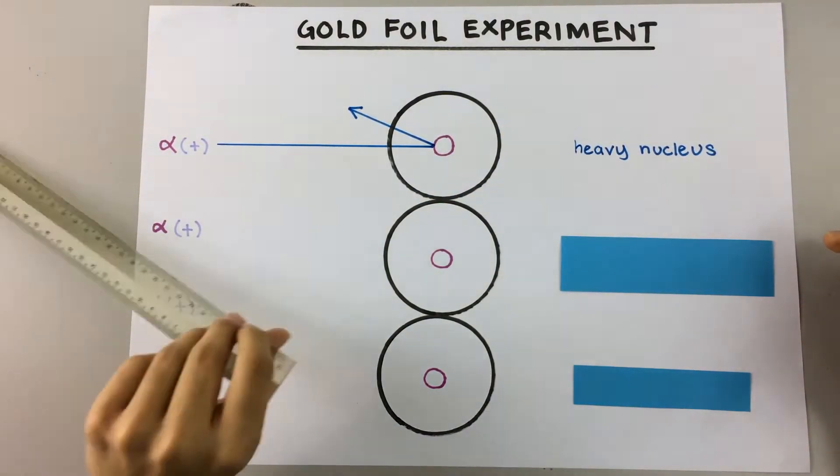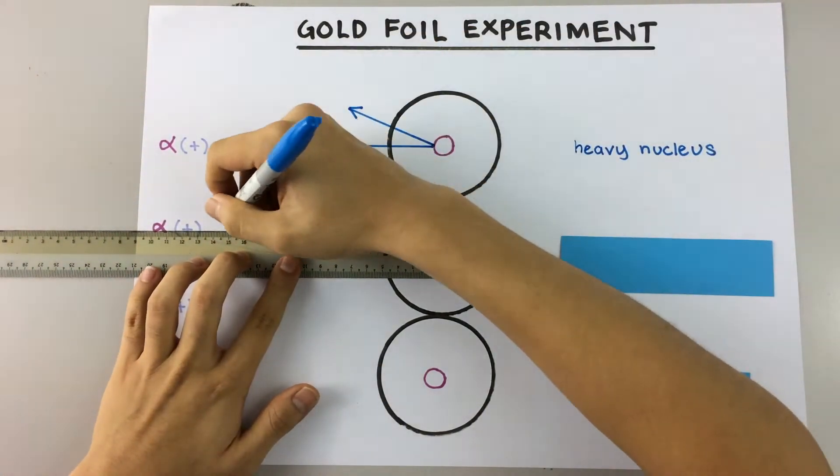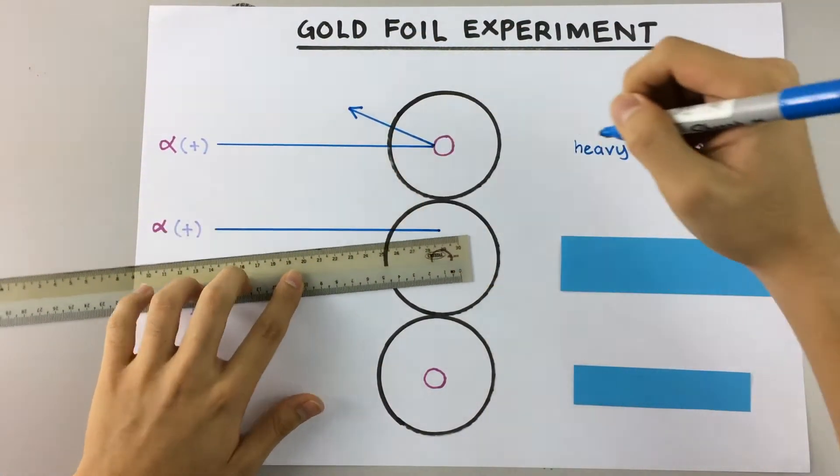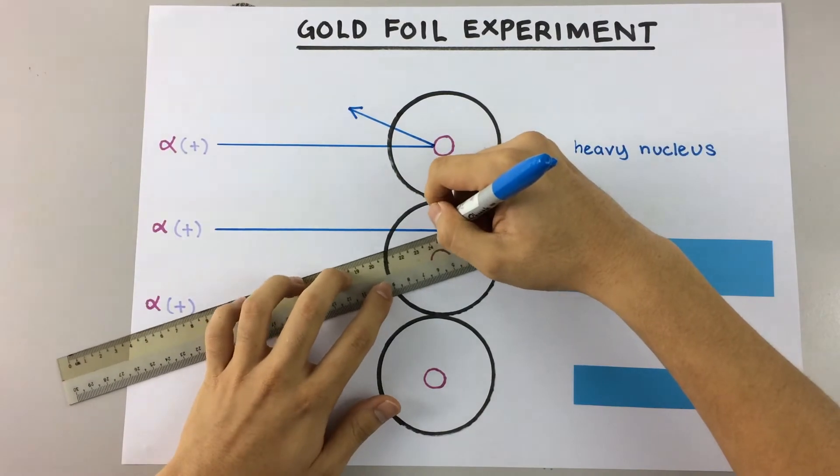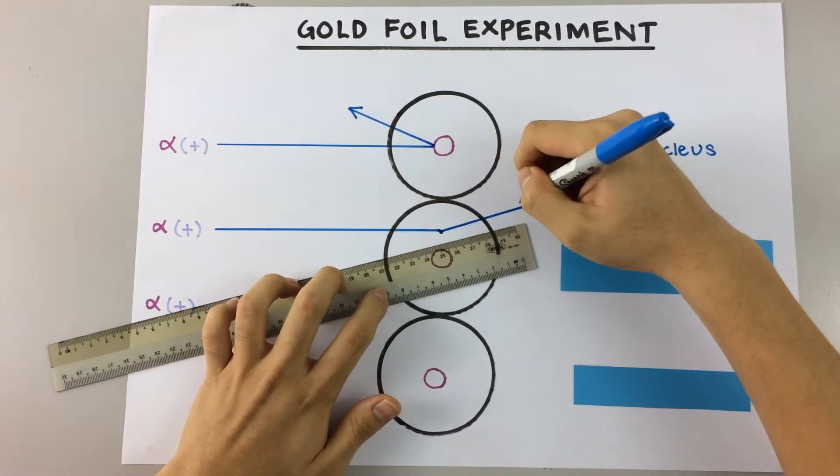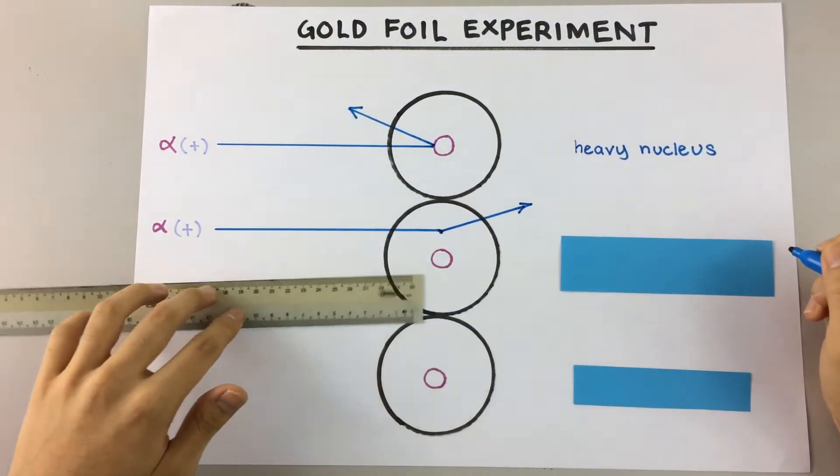Moving on, the second observation he makes from these alpha particles is that some of them deflect by a small angle. And what does this prove about the atom?